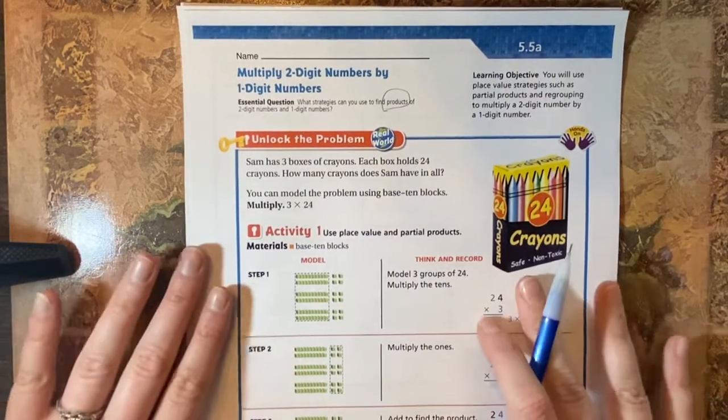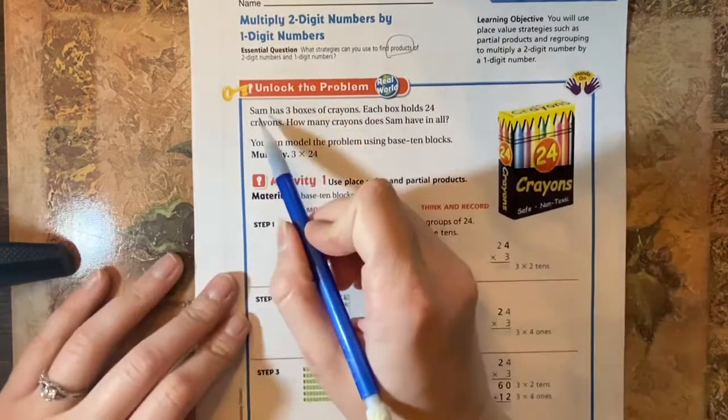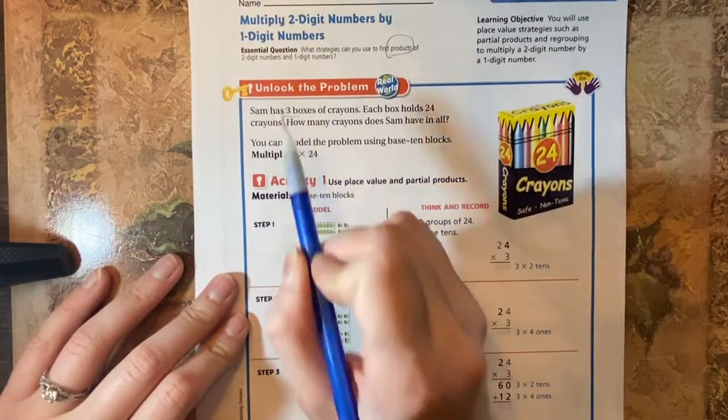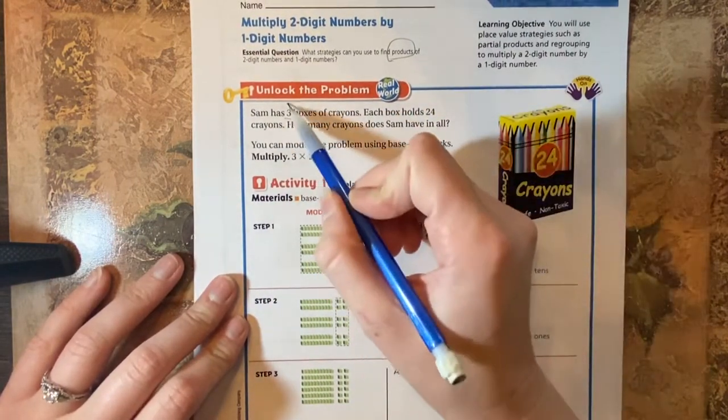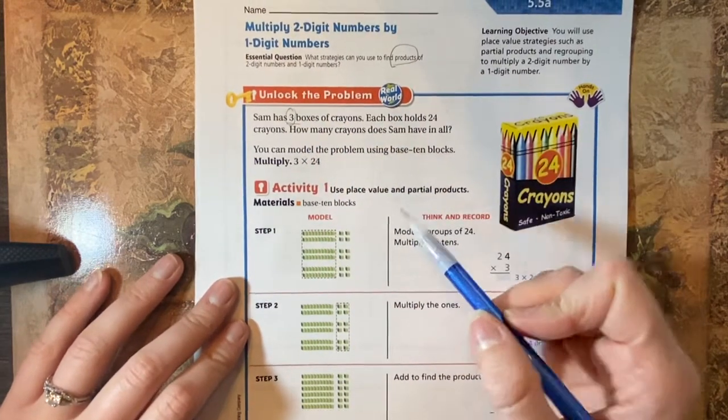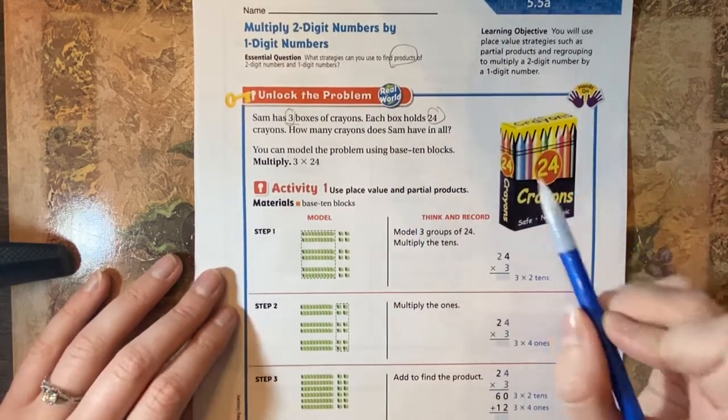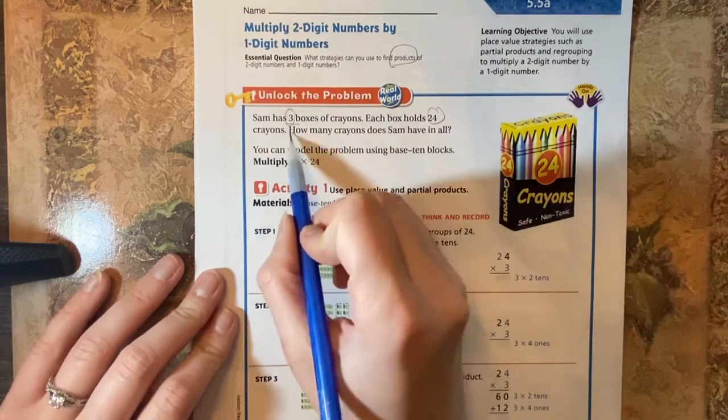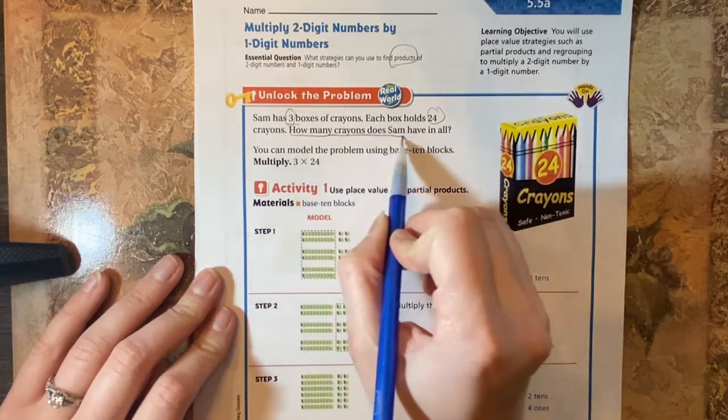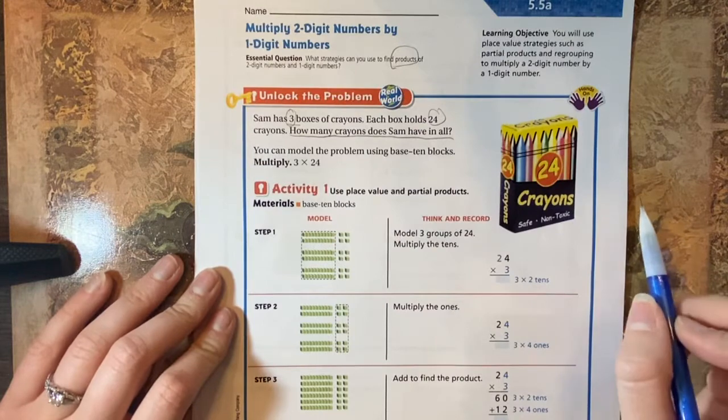You guys remember that. So let's go ahead and get started. This problem says Sam has three boxes of crayons, so we're going to circle our important number. Each box holds 24 crayons. That's also an important number. And our question is, how many crayons does Sam have in all? So we're going to underline that question.